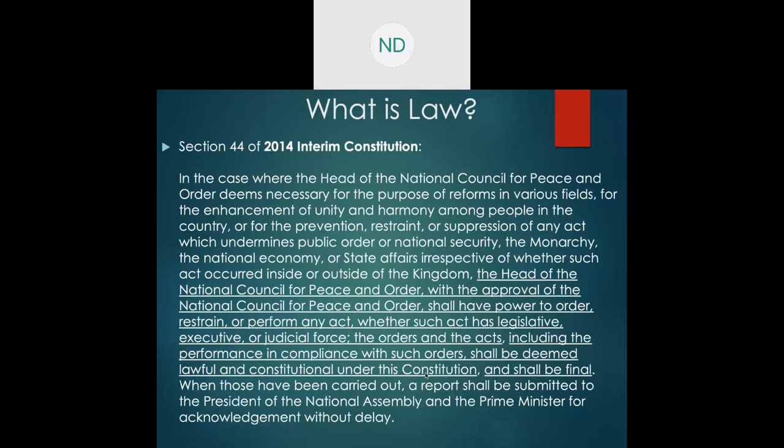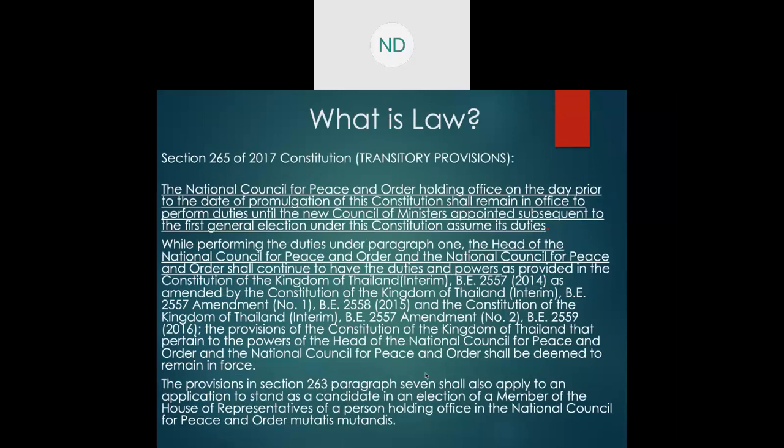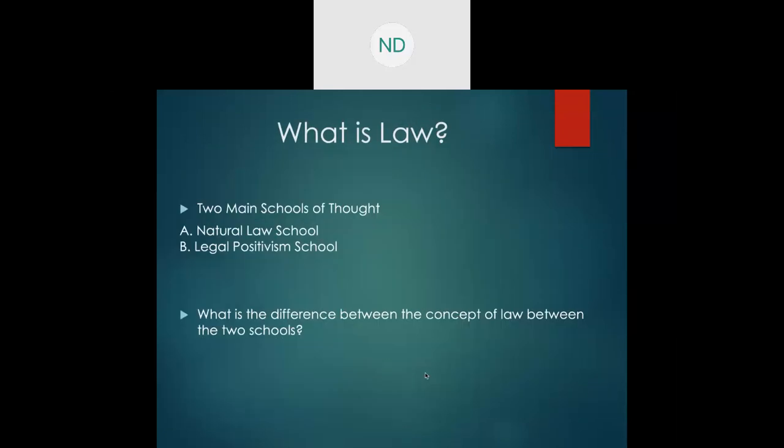For example, imagine that if the head of NCPO ordered something seriously immoral, it is still the law. So I hope these two examples depict the problems of what law is, and of course, this involves the problem of the conflict between morality. To solve or understand what law is, we need to look into the schools of thought — the two main schools being the Natural Law School and the Legal Positivism School.